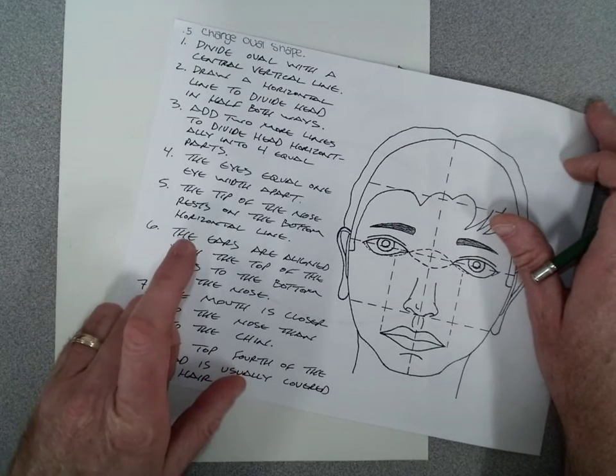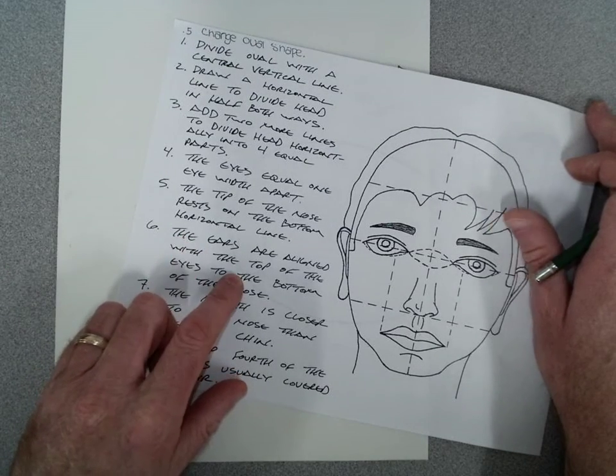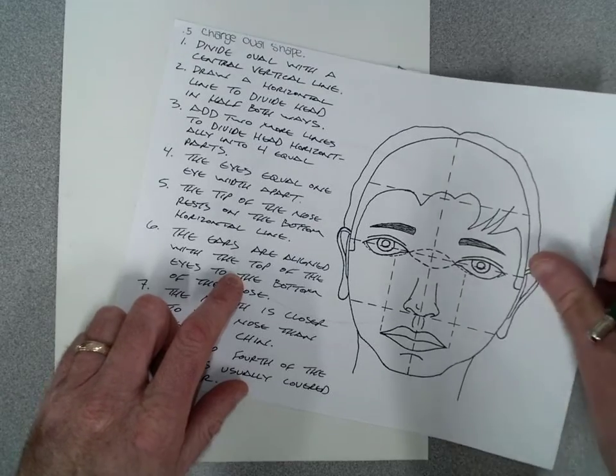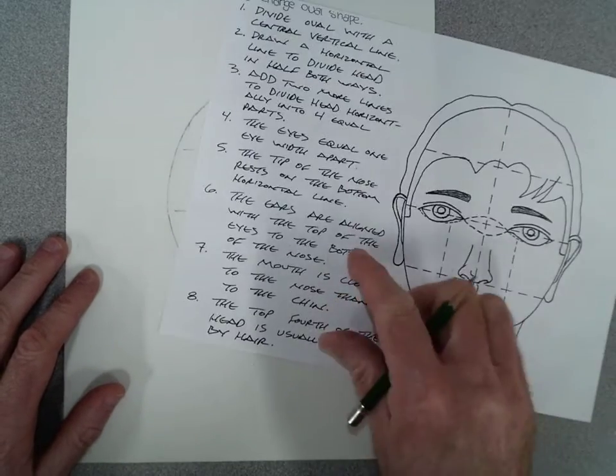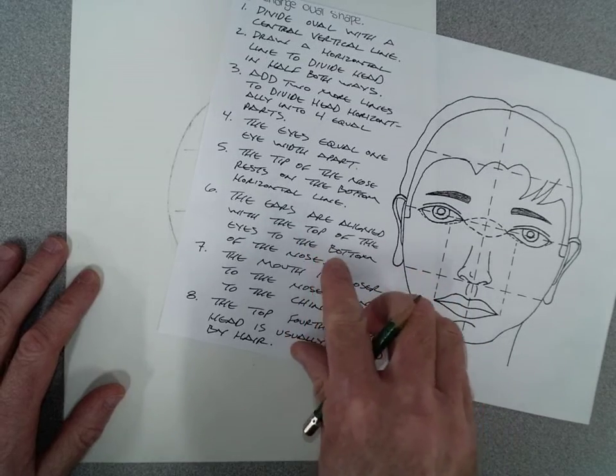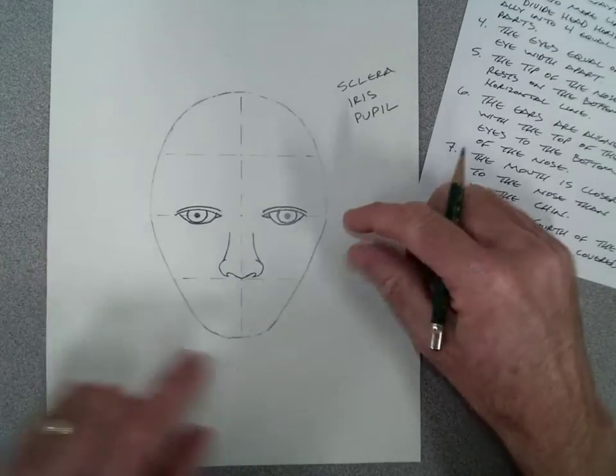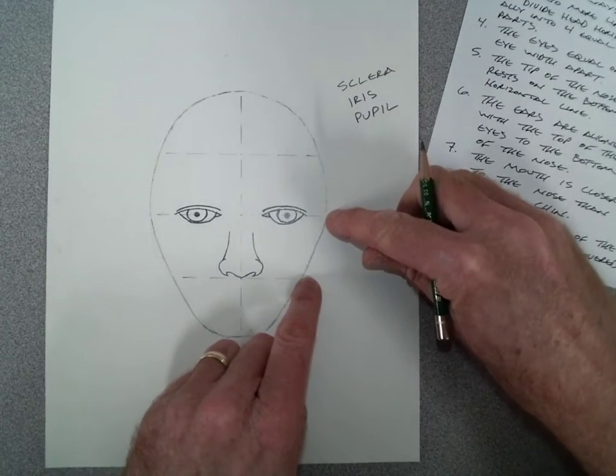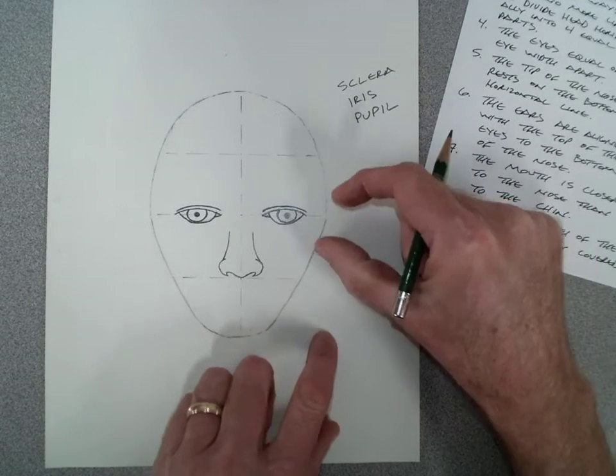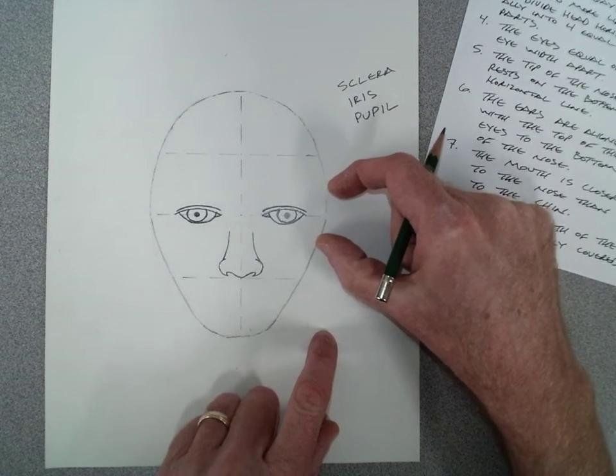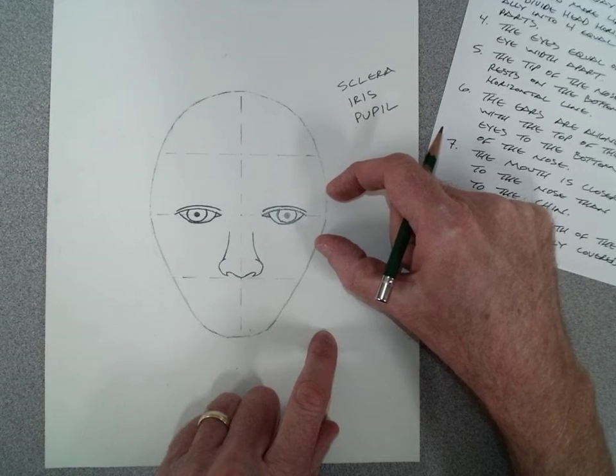We are now ready for direction number six, working on the ears. The ears are aligned with the top of the eyes to the bottom of the nose. Your ears actually go from the eyes to the nose, from here to here. A lot of people think ears are really small and up here around your eyes and forehead.